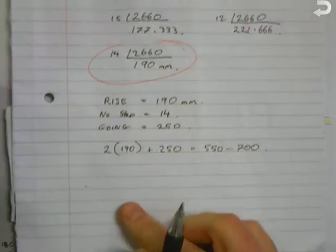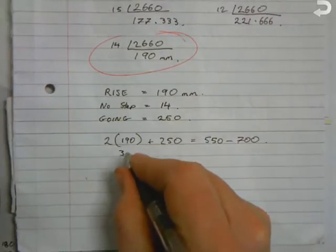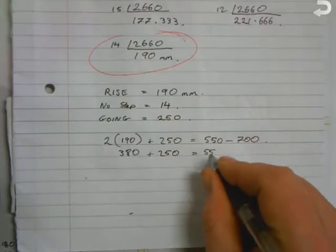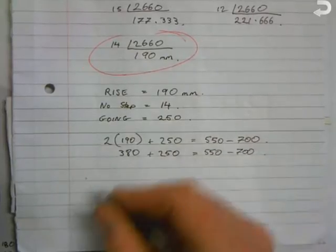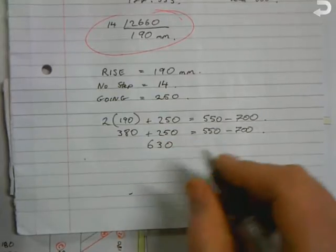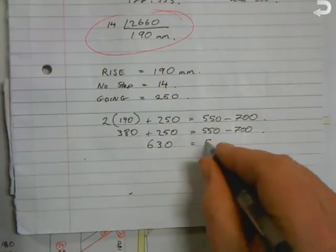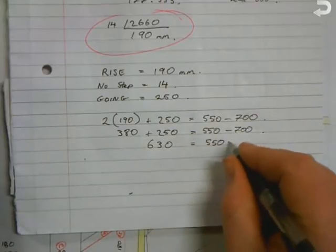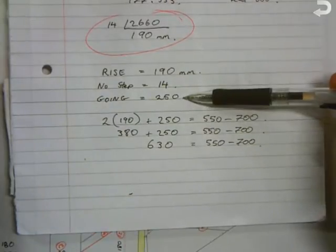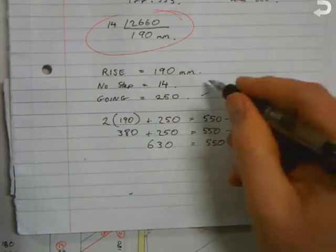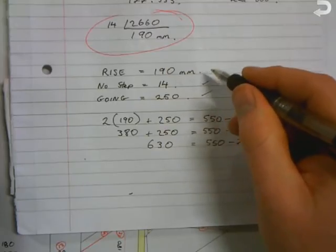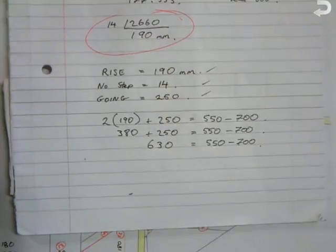So if we work that out, that's 380 plus 250. So we add these together, the answer we're getting there is 630. That fits perfectly within our range of figures, so we know that this 250 is correct. That's going to be our going. Steps correct, it's less than 16, and then the rise 190, so that's less than your 220. Those are your answers to the first part of that question.